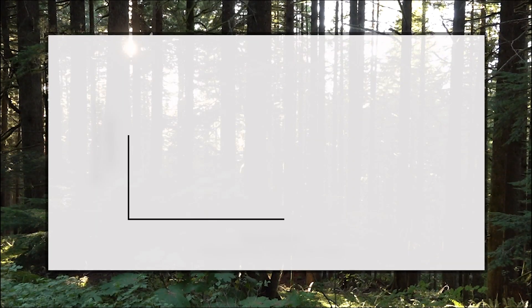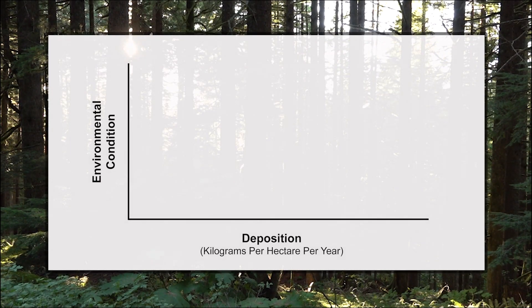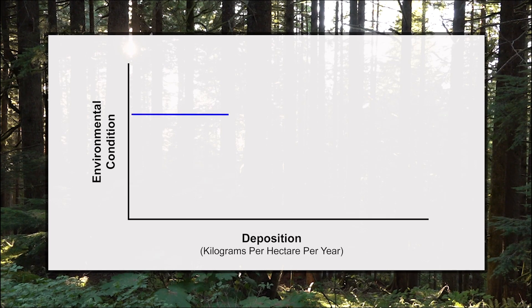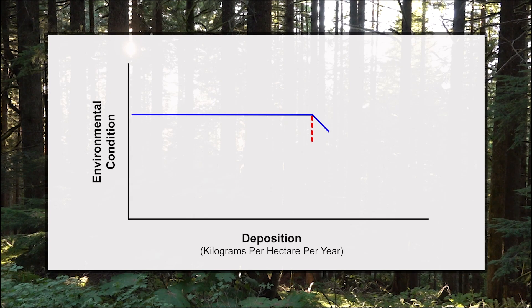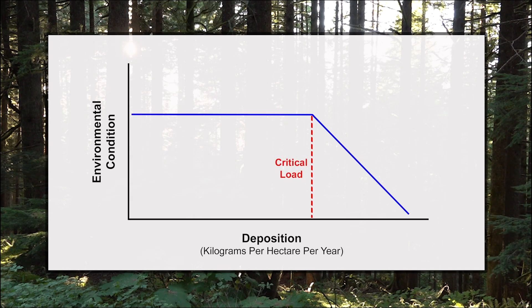This brings us to the concept of critical loads, which are used to identify when an ecosystem, or a part of an ecosystem, begins to experience harm from sulfur or nitrogen deposition. In other words, a critical load is the level of deposition at which an ecosystem begins to experience harm.